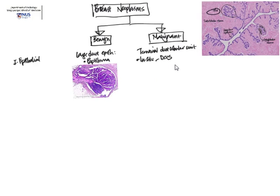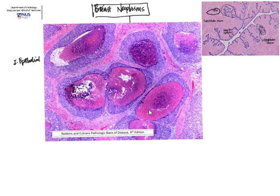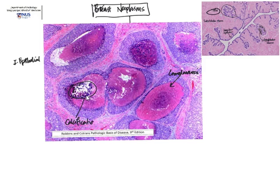For in situ, we have ductal carcinoma in situ. Here is an example from Robbins. What you notice is that they're very rounded because they're existing lobular and ductal structures expanded by sheets of neoplastic cells. If you look carefully, within each individual expanded lobule or duct, there's a pink area — this is necrosis. We call this comedonecrosis because it's sort of in the center of this island. There are also purplish areas representing dystrophic calcifications from necrotic tissue.